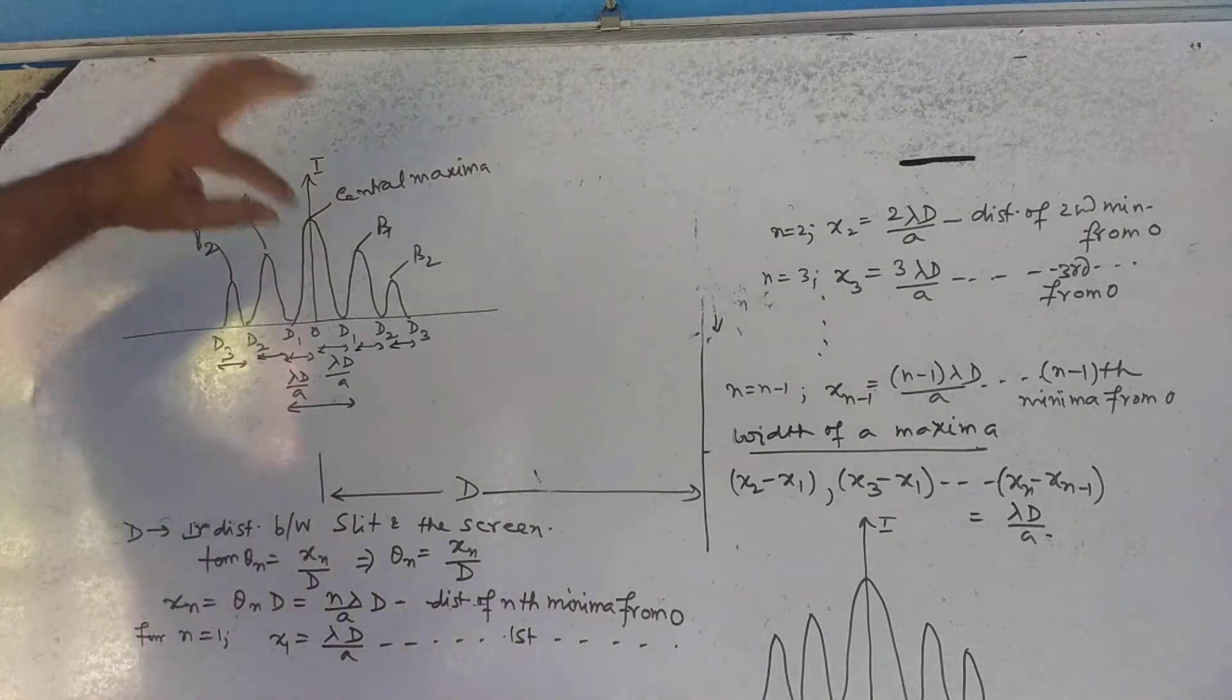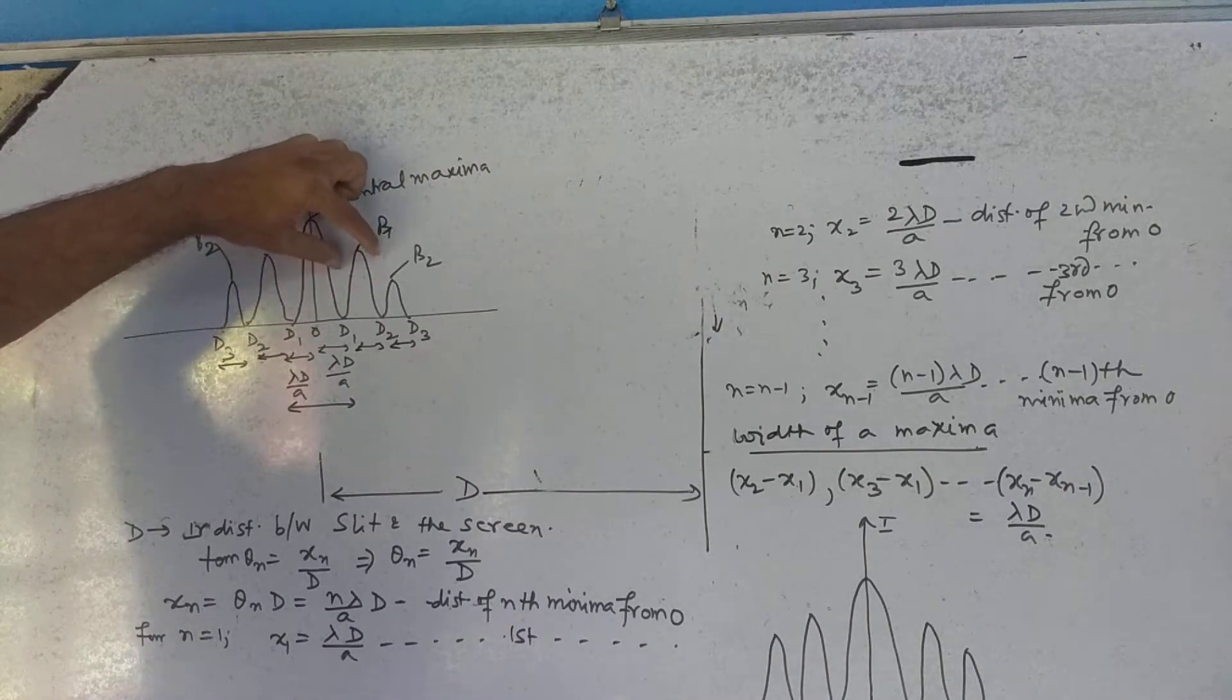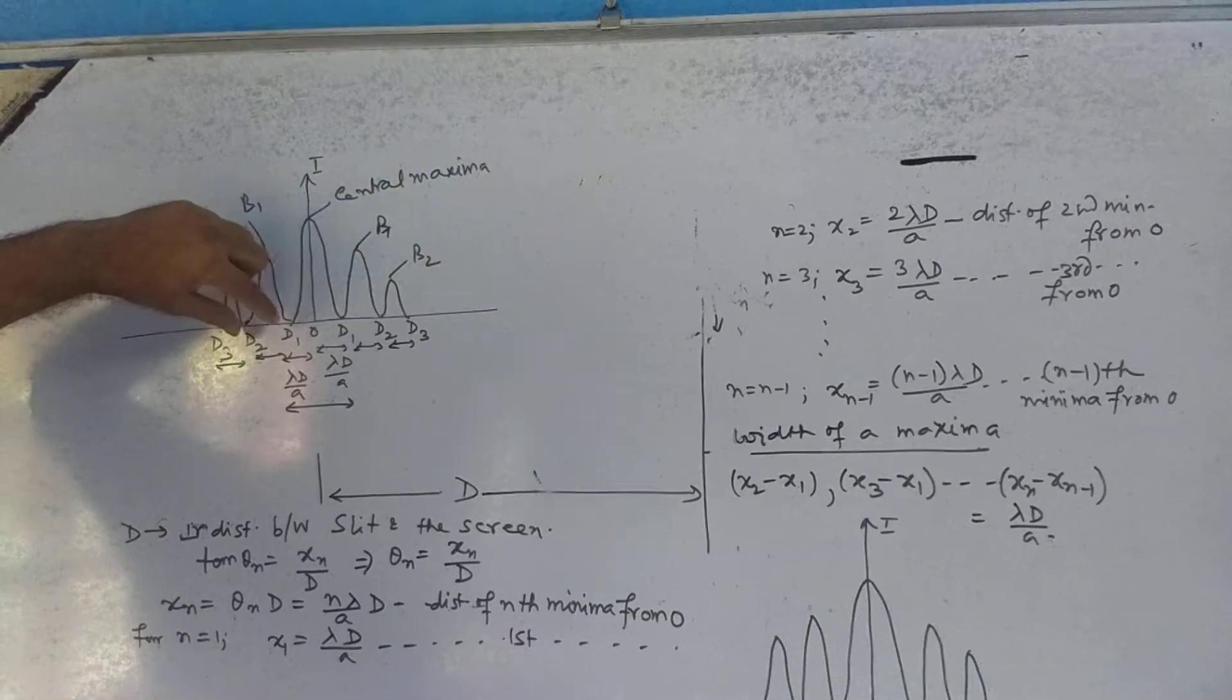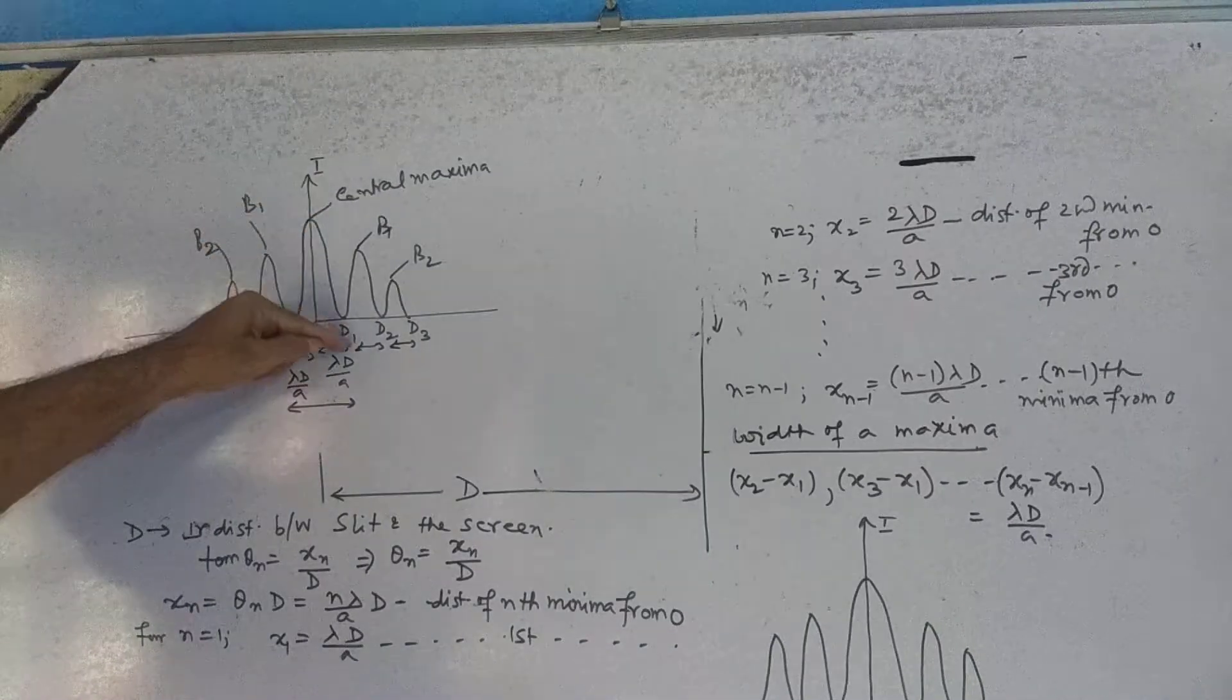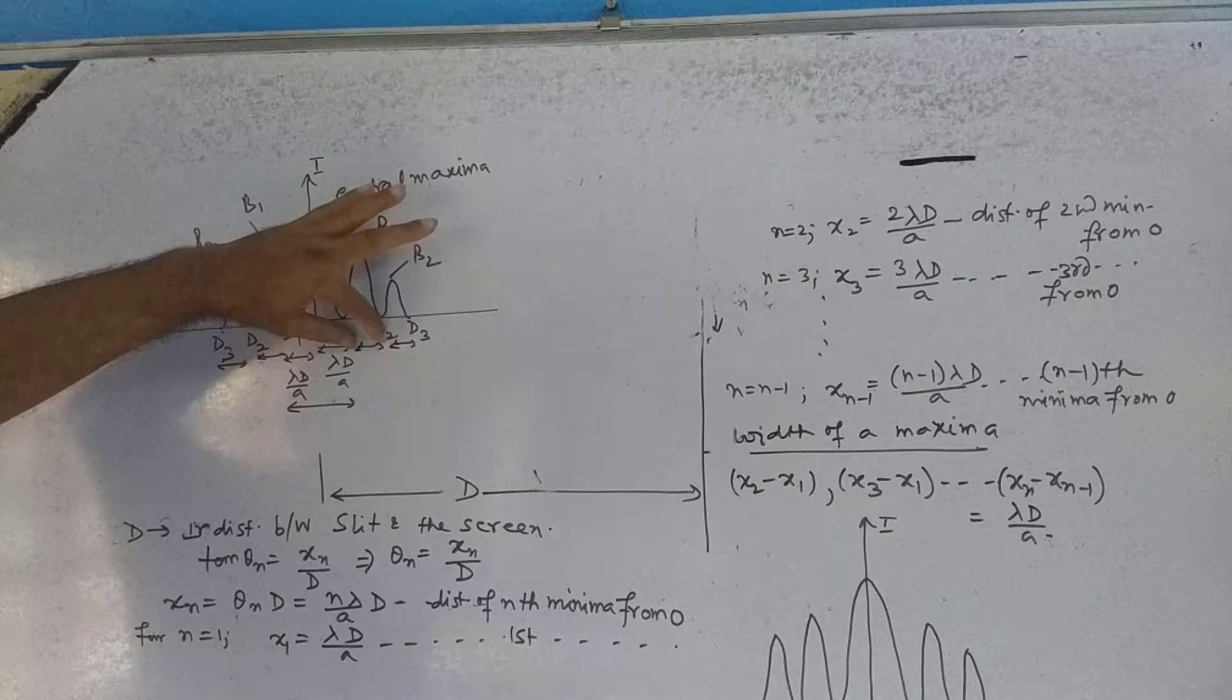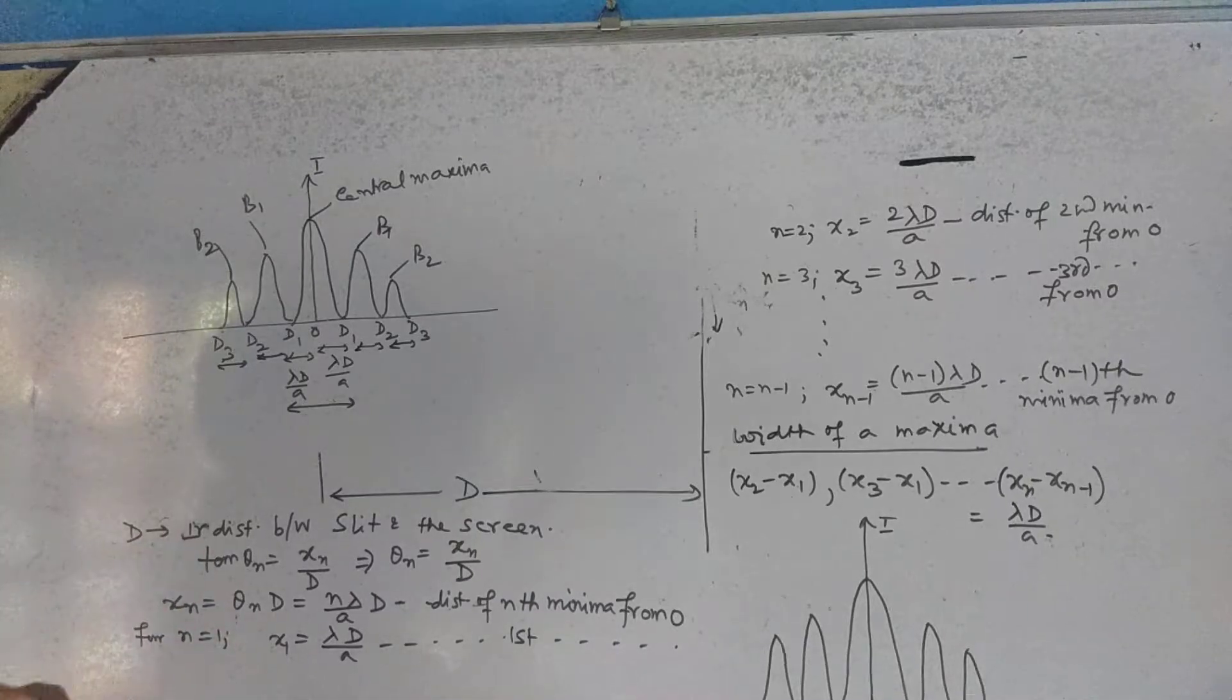Do you understand? The other maxima, d1 to d2 is the first maxima, d2 to d3 is the second maxima. But central maxima, this is the whole, what we see is lambda d, but it is the whole twice lambda d.